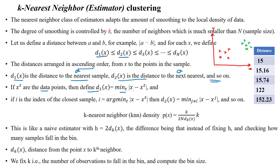If i is the index of the closest sample, then i equals the index of the minimum distance between the data point x and any sample x from the given data points.